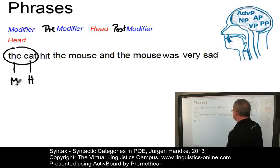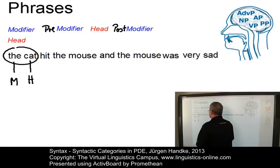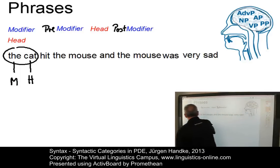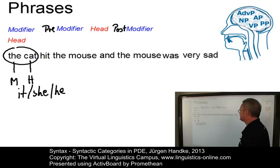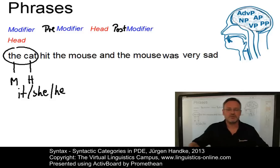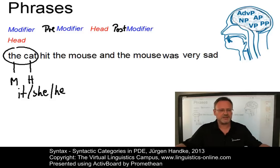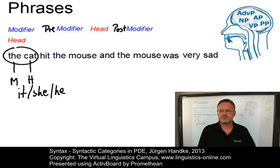Another test is the substitution test. We can substitute phrases by other elements — for example, in this case by it or she, depending on what sort of cat you have. So, phrases can be replaced by other elements and moved around. These are important tests.